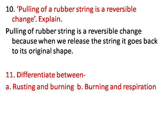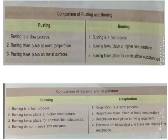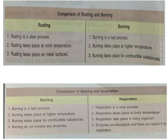Number eleven: differentiate between rusting and burning, and between burning and respiration. Rusting is a slow process whereas burning is a fast process. Rusting takes place at room temperature while burning takes place at higher temperature. Rusting takes place on metal surfaces while burning takes place on combustible substances — that is, substances which can burn.